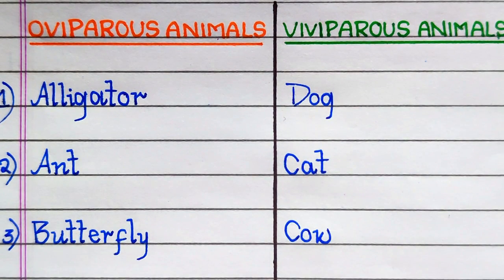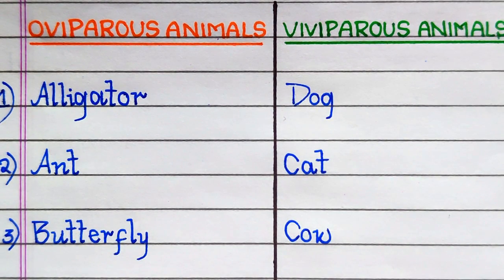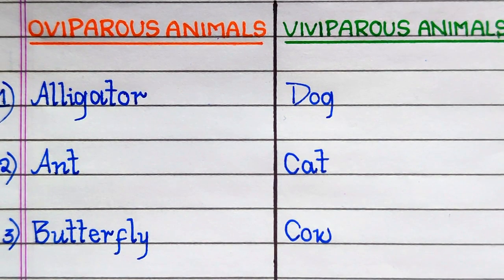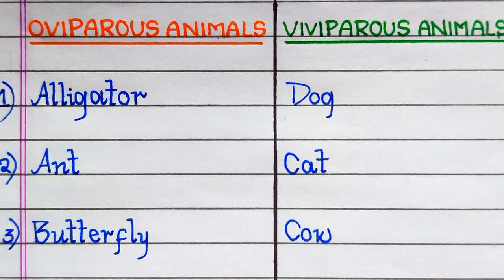The name of the 1st oviparous animal is Alligator, 2nd Ant, 3rd Butterfly. The name of the 1st viviparous animal is Dog, 2nd Cat, 3rd Cow.